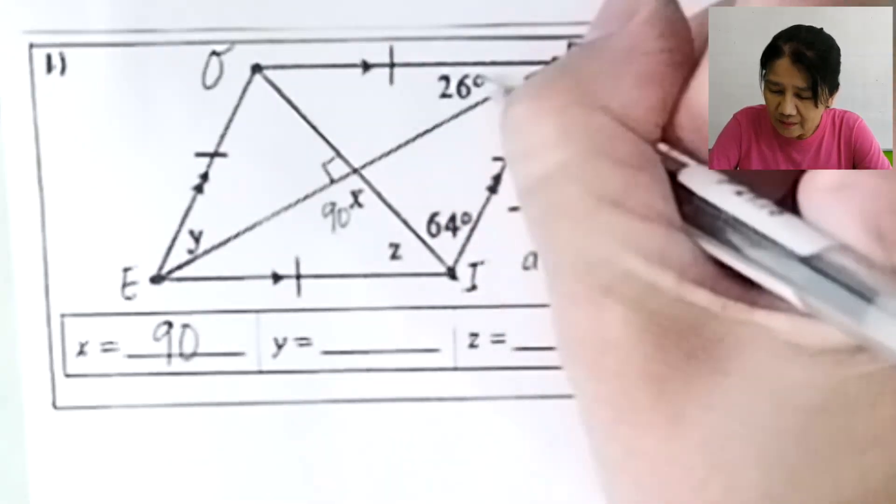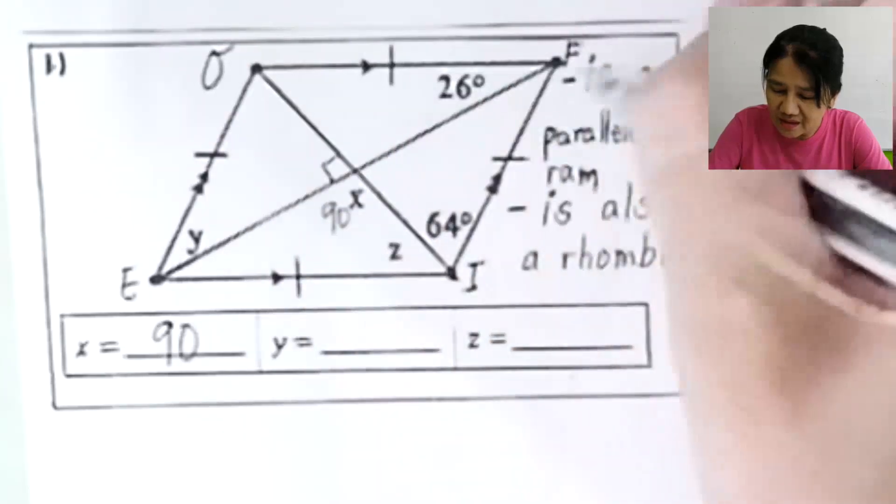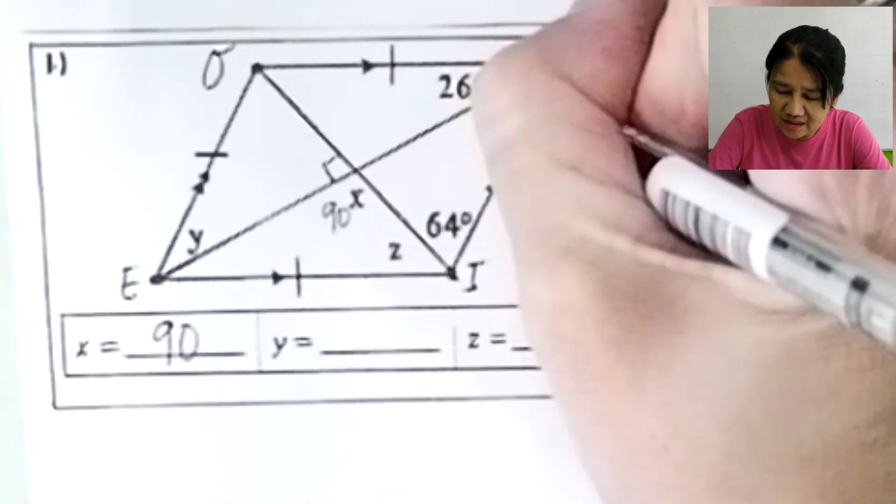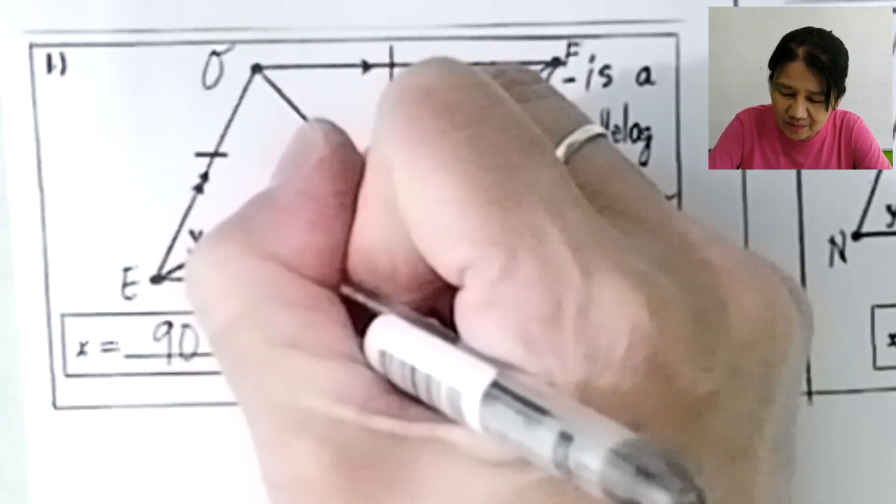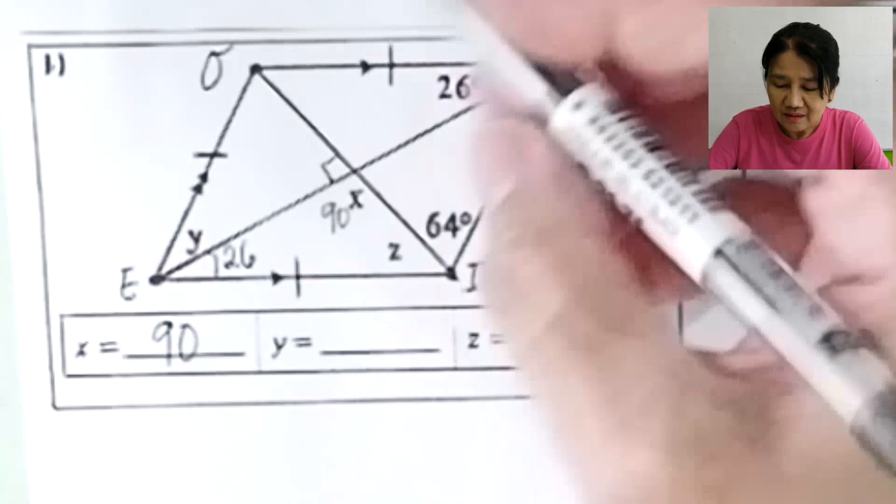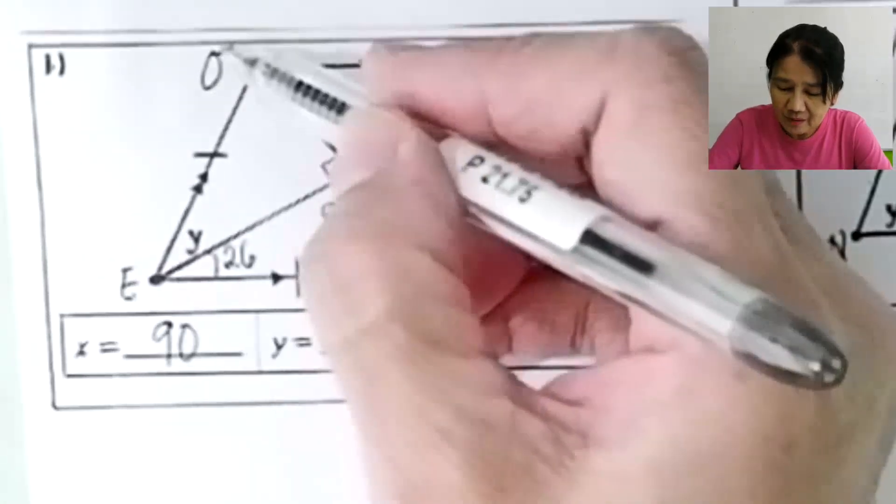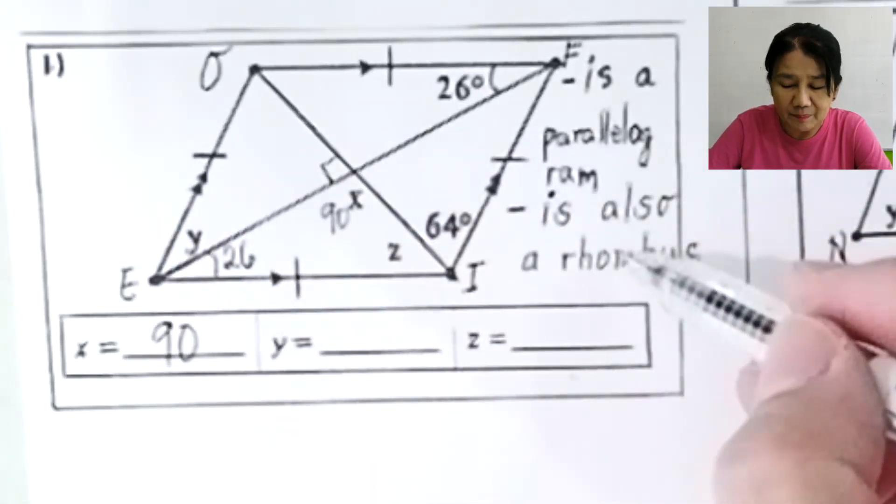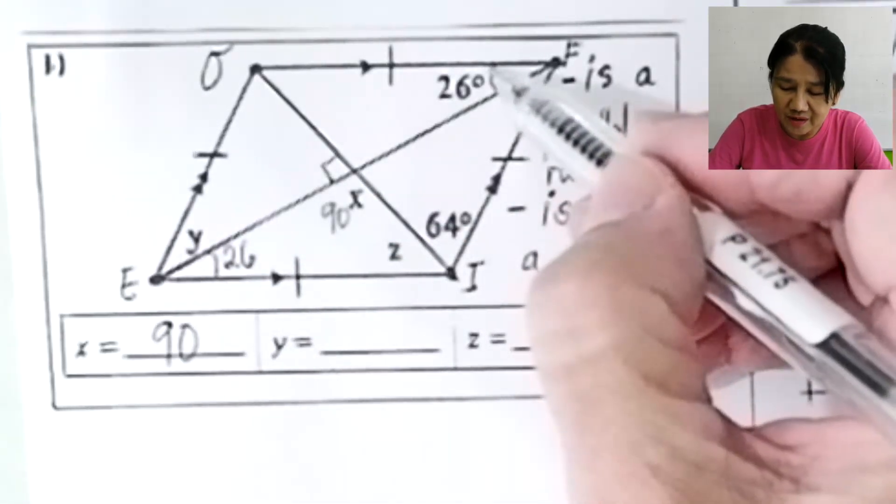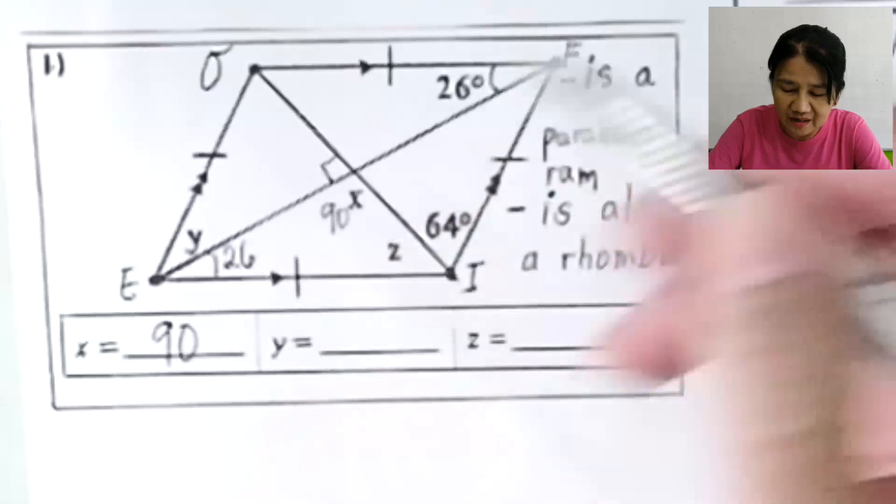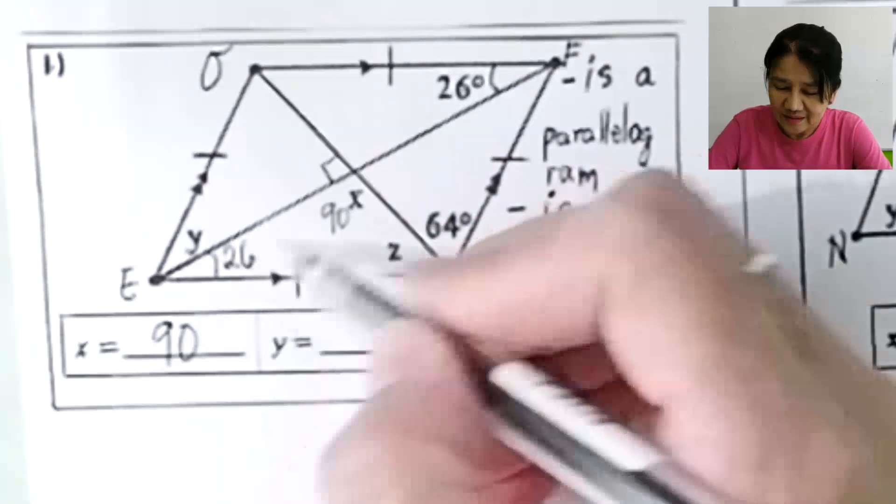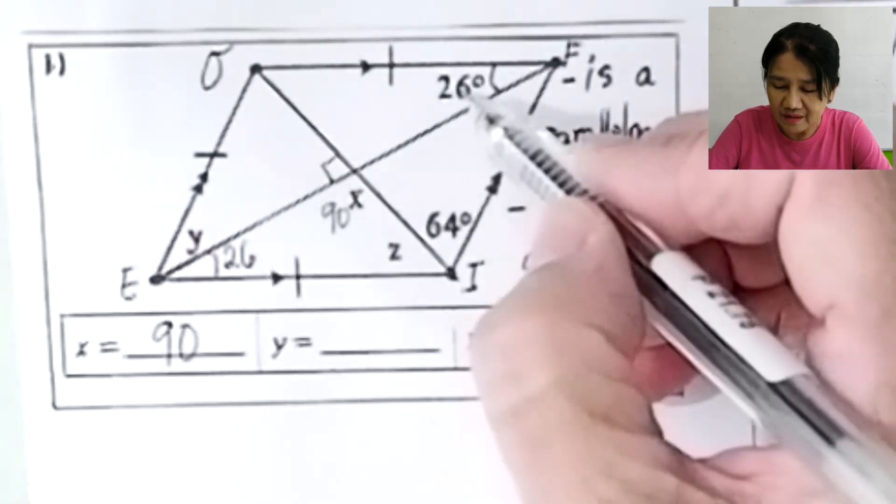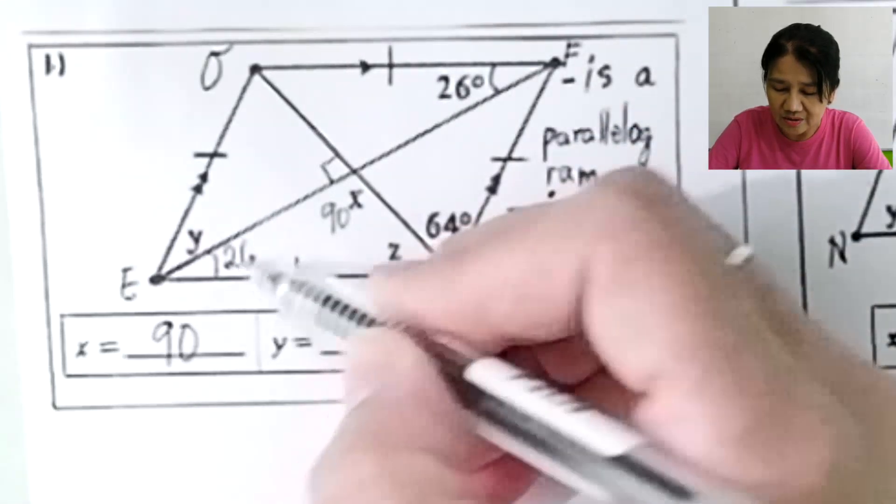Now, given that this is a parallelogram, if this angle is 26 degrees, this must also be 26 degrees. Why? Because this side line segment OF and line segment EI are parallel. So therefore, these are alternate interior angles. And you know that alternate interior angles are congruent. So if this is 26, this is also 26.